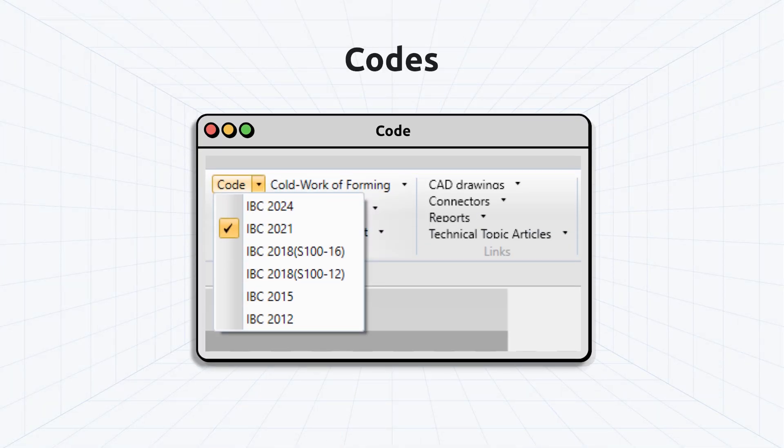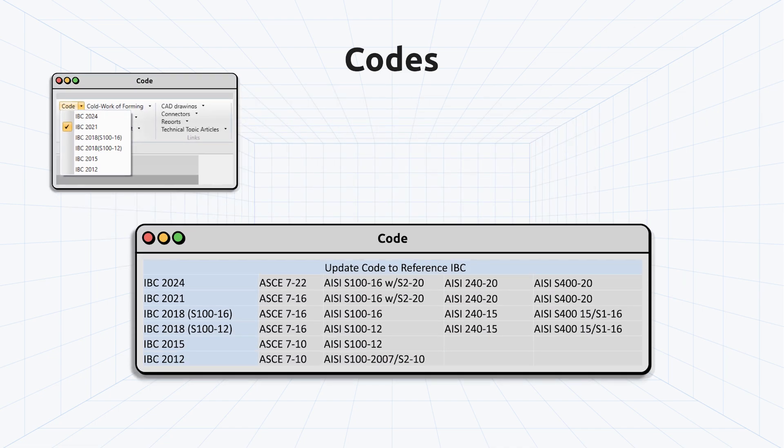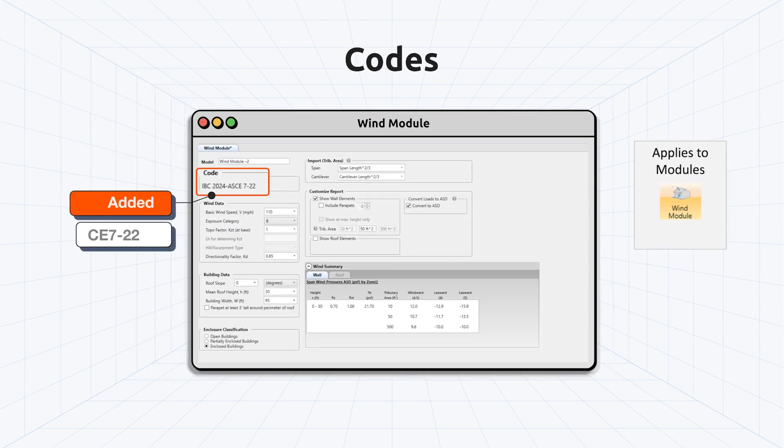The codes within CFS Designer are now linked to the IBC code. Selecting the IBC code will automatically select the appropriate ASCE and AISI codes and standards. Older files, when opened, will have the user verify the IBC code. ASCE 7-22 has been incorporated within the Wind module.